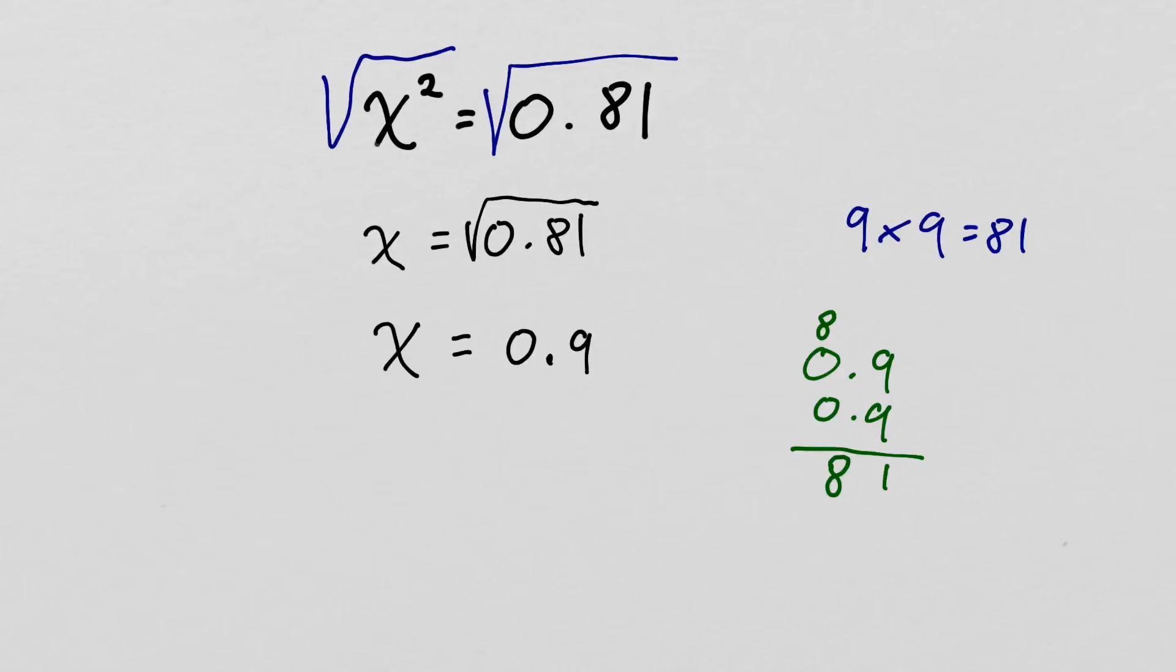Bring down our 8. Okay, 81. But we have two decimal places. One right here, one right here, in the tens place, and in the tens place. So I need to move my decimal over two places. So 0.9 times 0.9 gives me 0.81. So it turns out that that indeed is our answer.